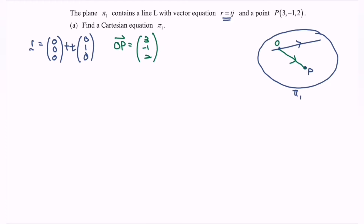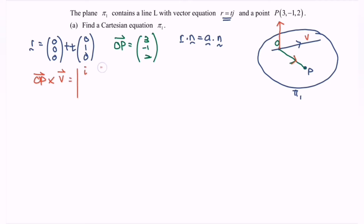Next, to find the plane we use r dot n equals a dot n. We are looking for the normal. The normal is found by crossing OP with the direction vector v. So we compute OP cross v using the determinant with i, j, k. Substituting: OP is (3, -1, 2) and direction v is (0, 1, 0).